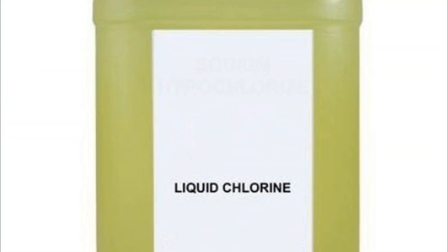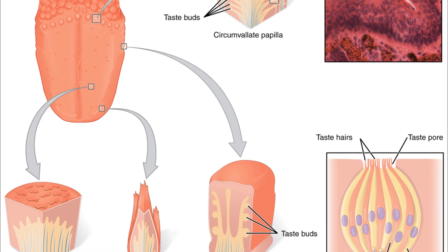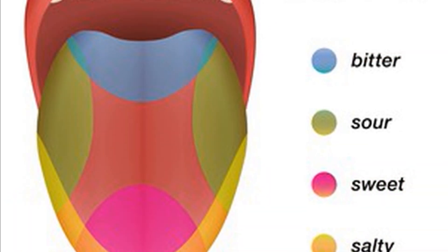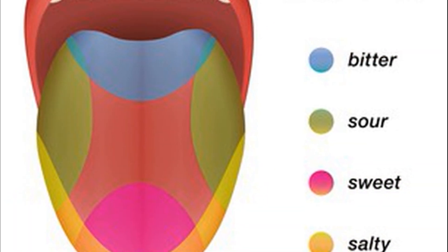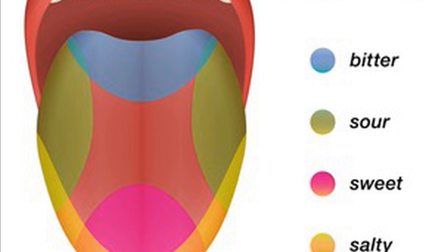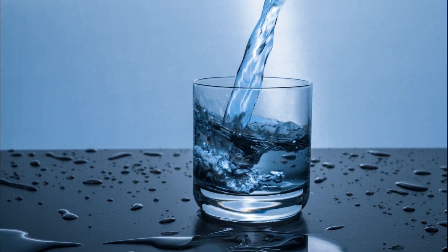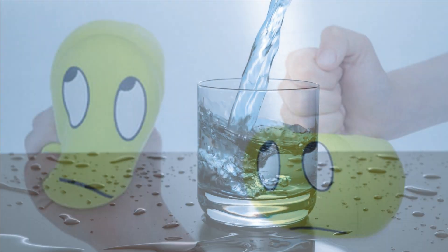e.g. chlorine. Taste: Most substances have a characteristic taste. The taste of a substance may be described as sweet, salty, sour or bitter. Pure water is tasteless.